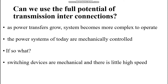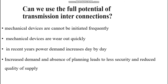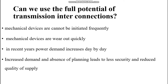The power systems of today are mechanically controlled. The problem with mechanical control is that switching devices are mechanical with little high-speed capability — the circuit breakers. Based on tripping speed and fault clearing time, mechanical devices cannot be operated frequently because of moment of inertia. Mechanical devices wear out quickly due to mechanical forces, wear and tear, and stresses. Day by day power demand is increasing, and absence of proper planning leads to less security and reduced quality of supply.